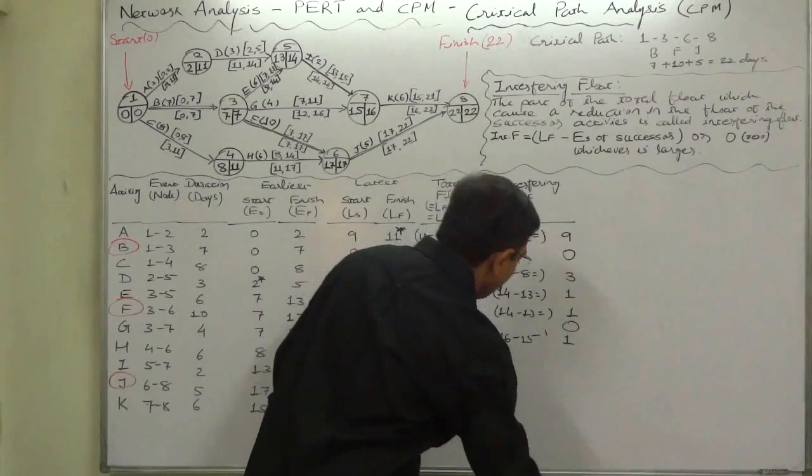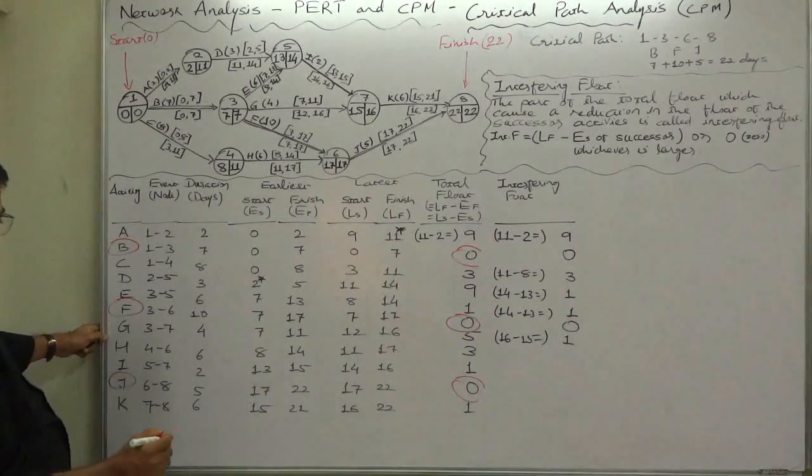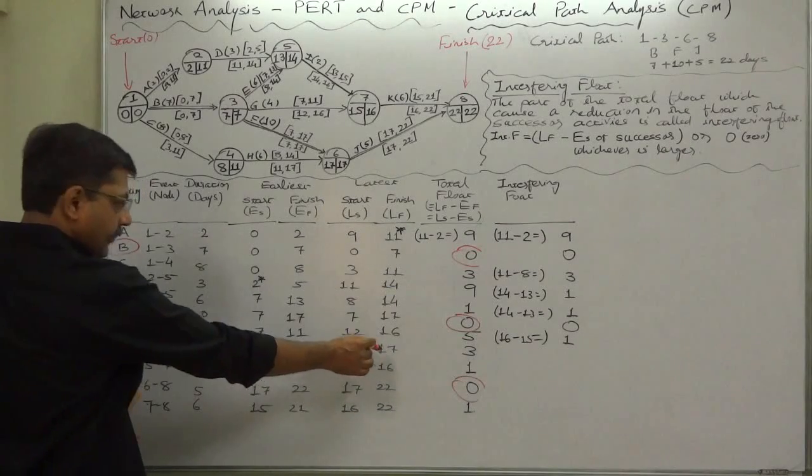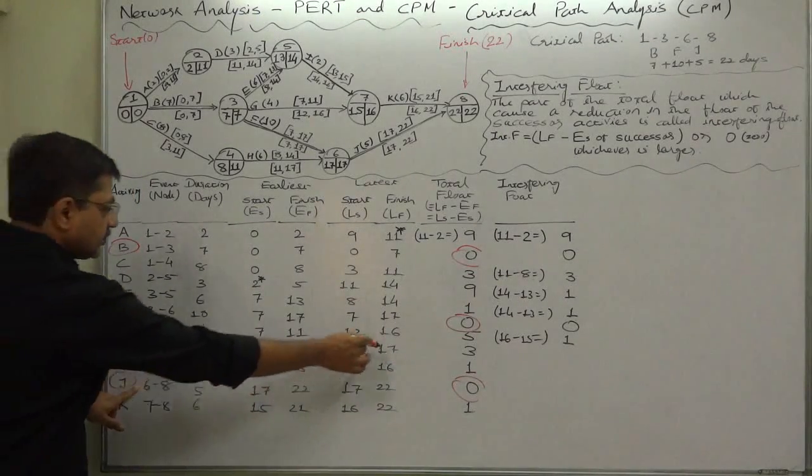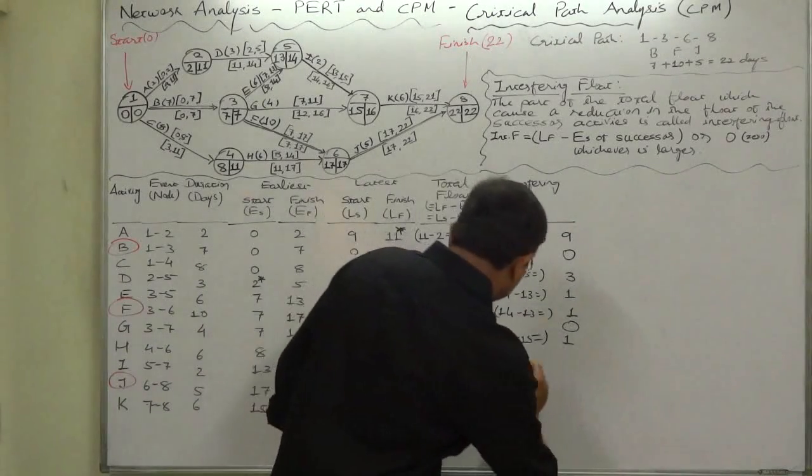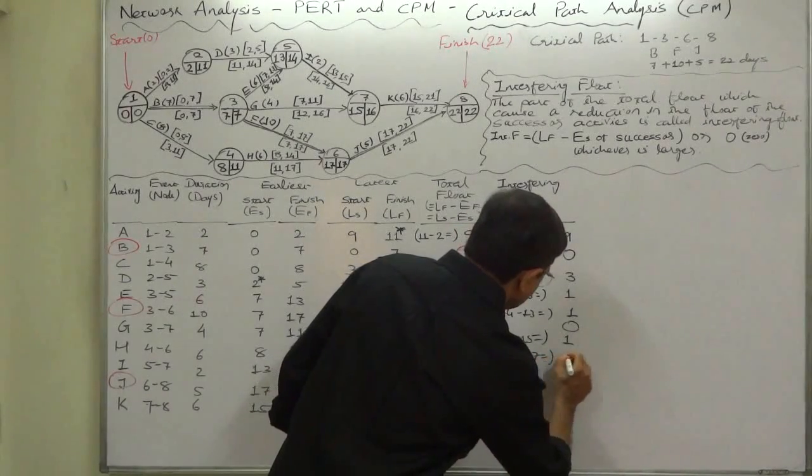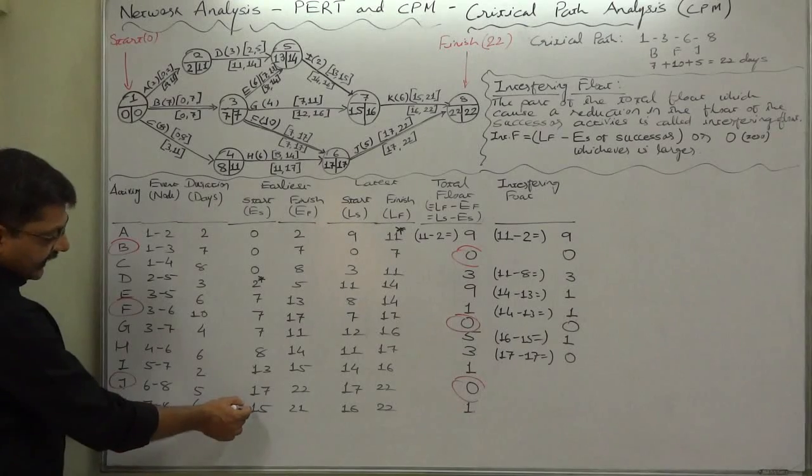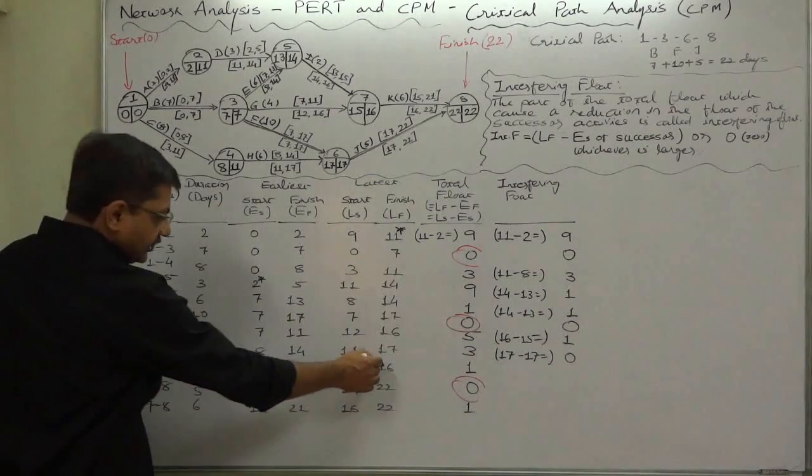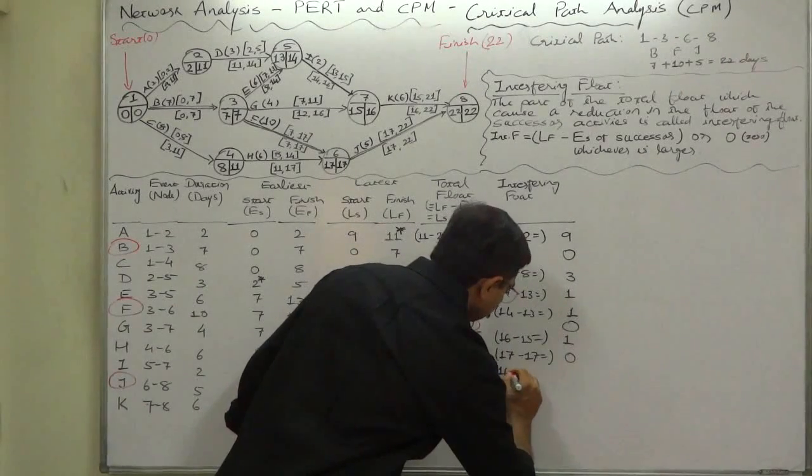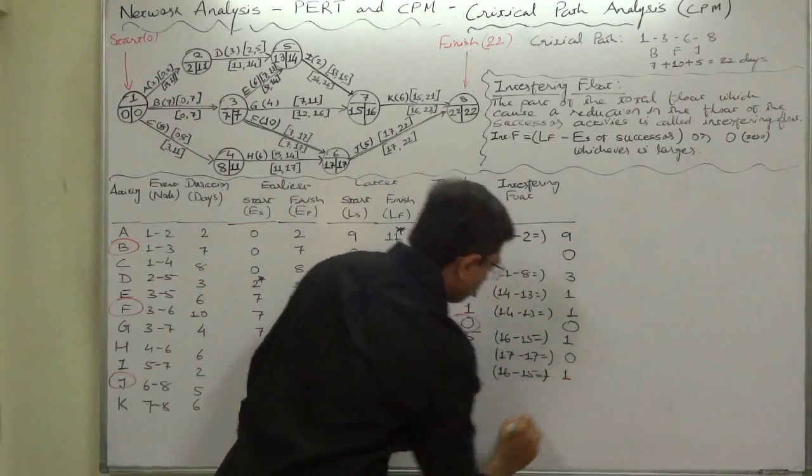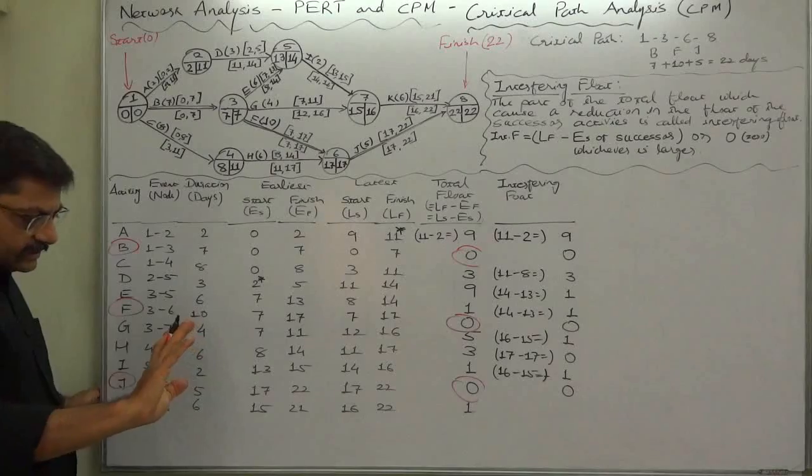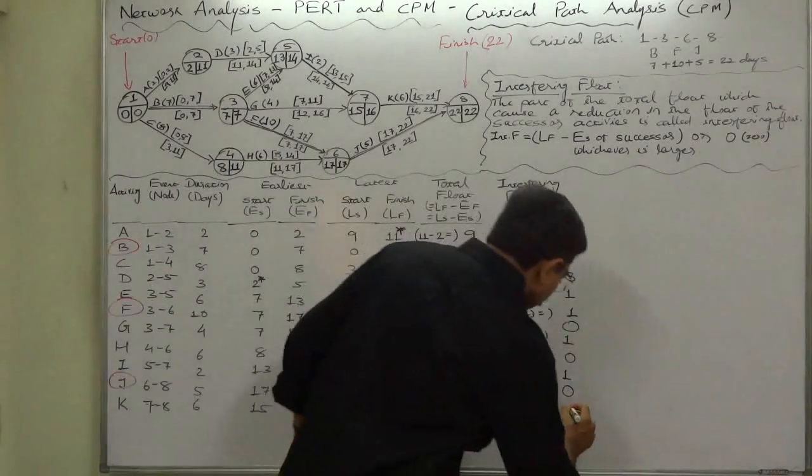Then H: latest finish time is 17, successor of H is J, earliest start time is 17, so 17 minus 17 equals 0. I: latest finish time is 16, successor is K, K's earliest start time is 15, so 16 minus 15 equals 1. J: critical activity, so 0. And K: there is no further successor activities, so it will be 0.